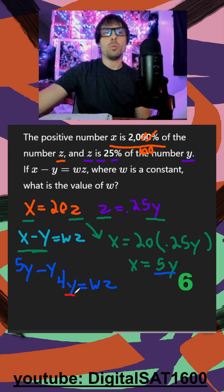I need to find a connection between y and z, and we already have that from our equation right here. So I can replace z with 0.25y. So my final equation is 4y is equal to w times 0.25y.